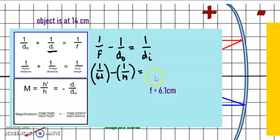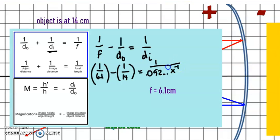Go ahead and put that in your calculator. You will get a number like 0.092 and it keeps going. You have to recognize that your answer is a reciprocal, so this is 1 over 9.2. Press the x to the negative one button, or one-over-x, to get the reciprocal. When you do that you will get 10.8 centimeters.